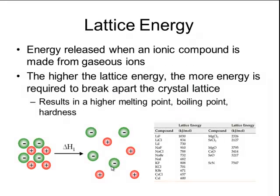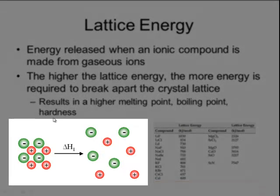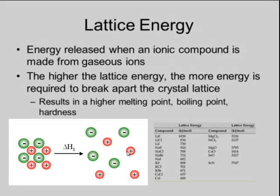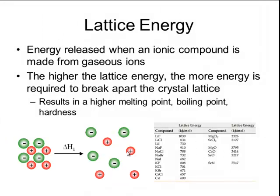The amount of energy that is released when that ionic compound is formed is the same amount of energy that is needed to break apart the crystal lattice. So the higher the lattice energy, the more energy that is required to break apart the crystal lattice. This high amount of energy results in higher melting points, boiling points, and hardness for all different kinds of ionic compounds.